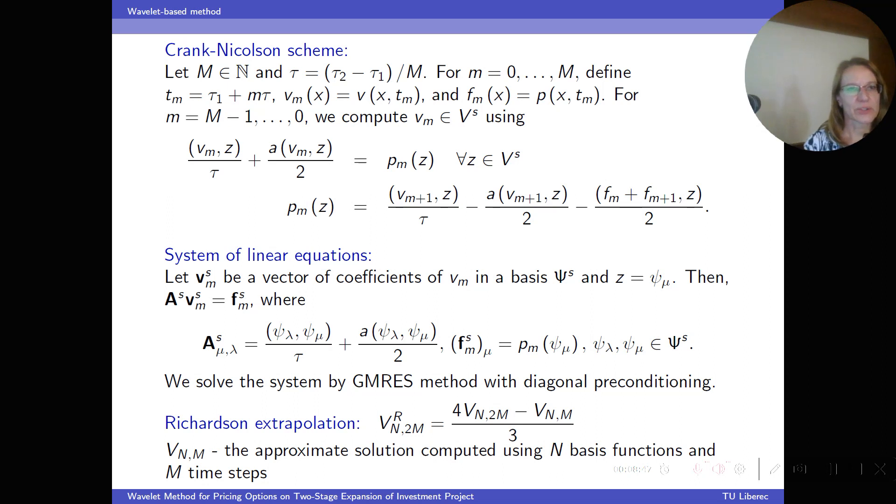To obtain a fully discrete algorithm, we employ Crank-Nicolson's scheme for time discretization, which leads to a system of linear equations. And since the matrix is non-symmetrical, we use GMRES method for its solution. We also use diagonal preconditioning because it is known that using wavelets together with diagonal preconditioning leads to optimally conditioned matrices. And the last step of the algorithm is the Richardson extrapolation, which enables us to compute the solution with fewer time steps than just the Crank-Nicolson's scheme.